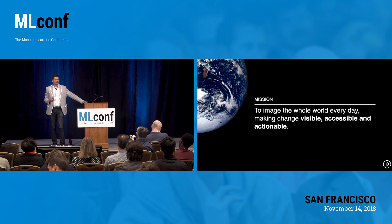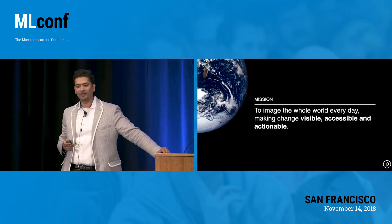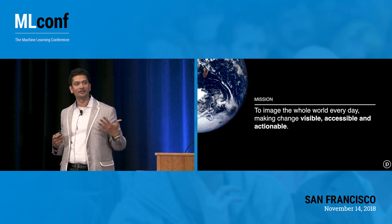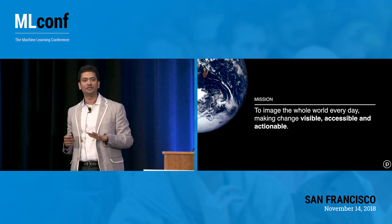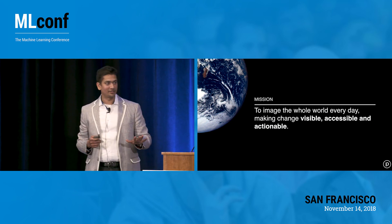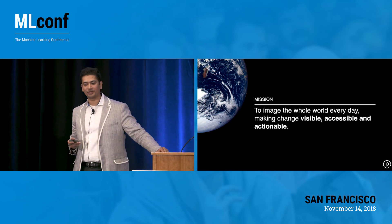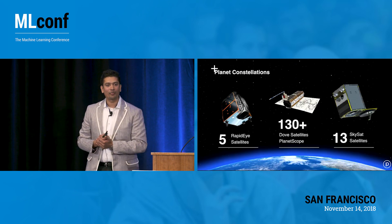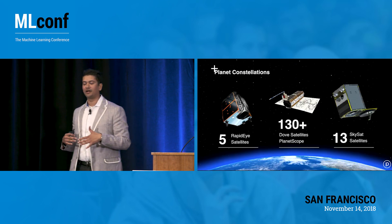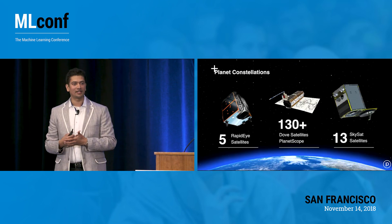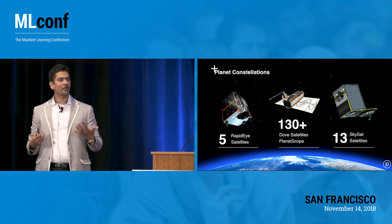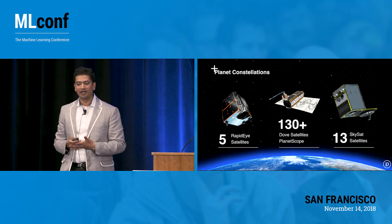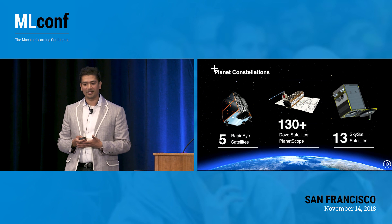Planet was founded seven years ago with the mission of imaging the world every day and making change visible, accessible and actionable. We operate three constellations of satellites: what we call RapidEye, our flagship DAO satellite constellation, and SkySats.